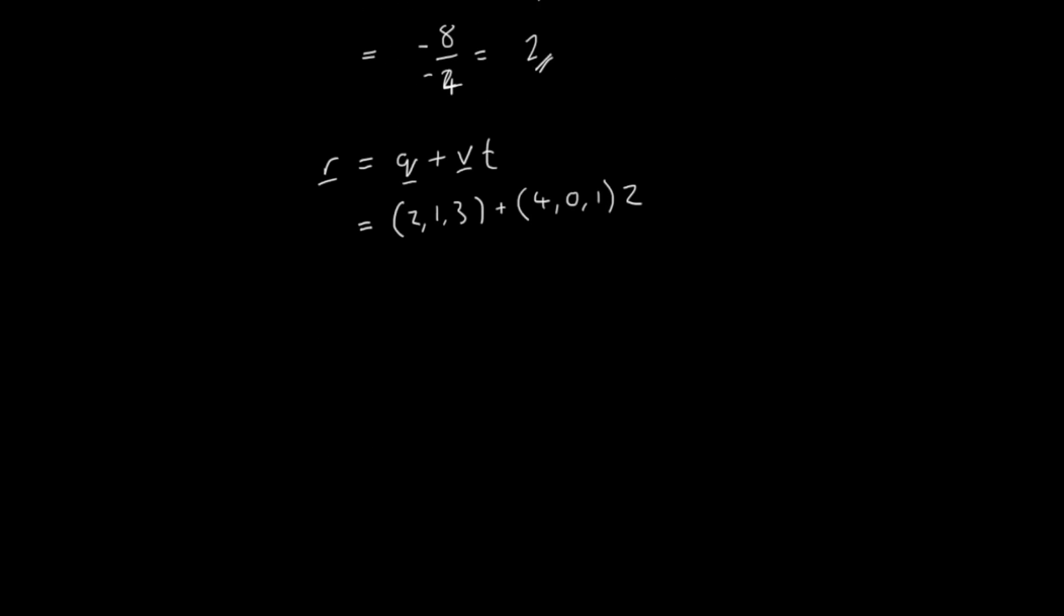So if I just evaluate this expression, q remains the same for now. And 4, 0, 1 multiplied by 2 is 8, 0, 2. And if I just add those two together, I get 10, 1 and 5.